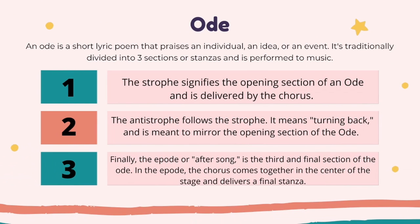An ode is a short lyric poem that praises an individual, an idea, or an event. You can write about someone you admire, something you would like to pay tribute to, or a special event in your life. In the past, odes were performed to music and delivered by a chorus.